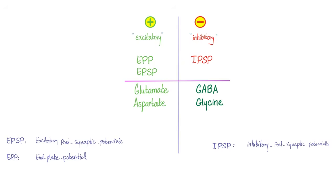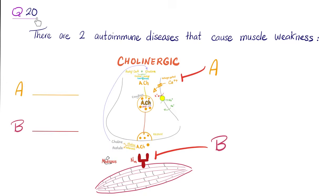The end plate potential is excitatory. Excitatory post-synaptic potentials are excitatory, but inhibitory post-synaptic potentials are inhibitory. When it comes to neurotransmitters in your brain, glutamate and aspartate are excitatory. GABA and glycine are inhibitory.